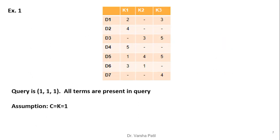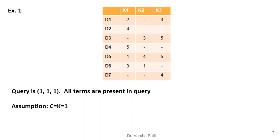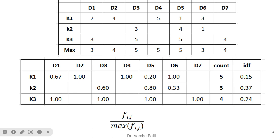Now we look at the example. Seven documents and three keywords are used. In the standard probabilistic model, only presence or absence of terms is considered — not how many times a term appears (term frequency) or its inverse document frequency. This variant probabilistic model considers TF and IDF to improve document ranking. Our query is (1,1,1), meaning all three keywords are present. For simplicity, c = k = 1. In the seven documents, keywords k1, k2, and k3 appear with various frequencies — for example, in document 1, k1 appears twice and k3 appears twice.